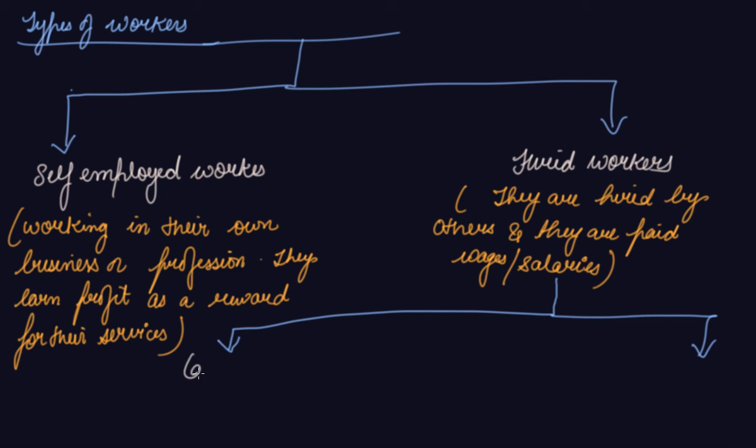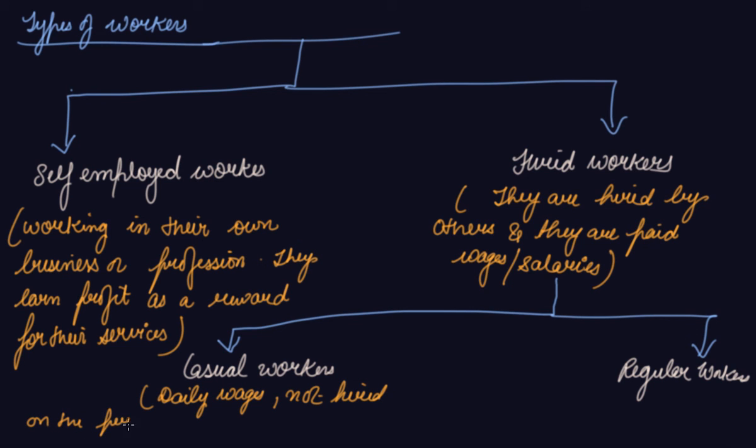Which is your casual workers and your regular workers. Now, your casual workers means they are on the daily wages. They are not on the permanent wages. They get daily wages and they are not on the permanent roles of the employee. Which means if I talk about labor, they are hired only on the daily wages.